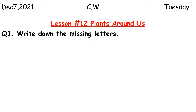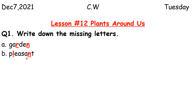Question Number One: Write down the missing letters. A is 'garden' — G, A, R, D, E, N. Underline R and N with a color pencil. B is 'pleasant'. What is this word? Pleasant. Underline letters L and N with a color pencil.